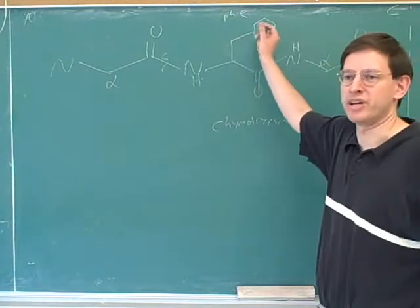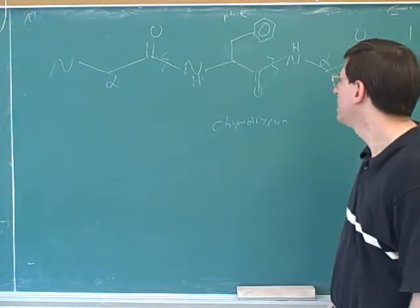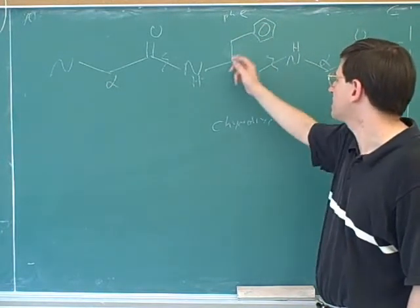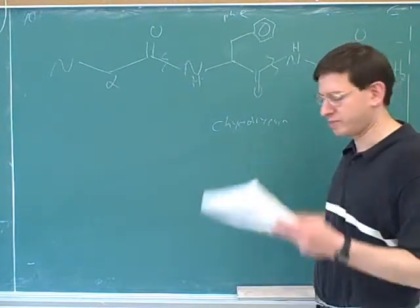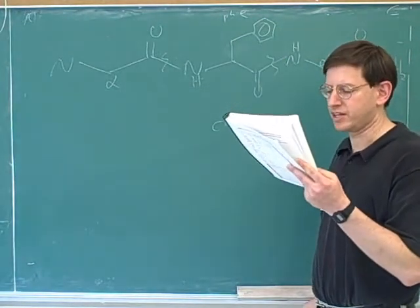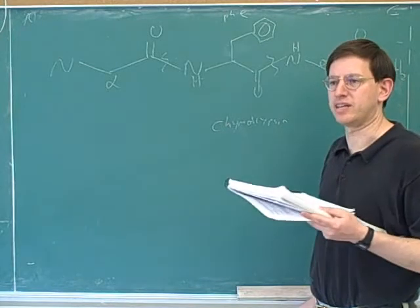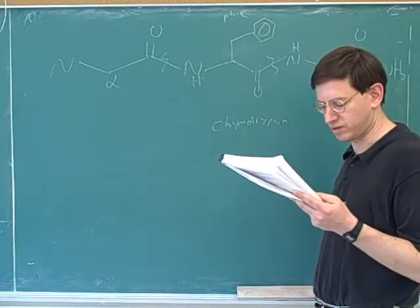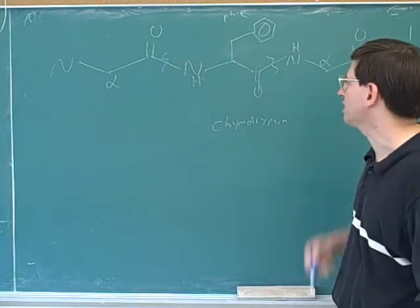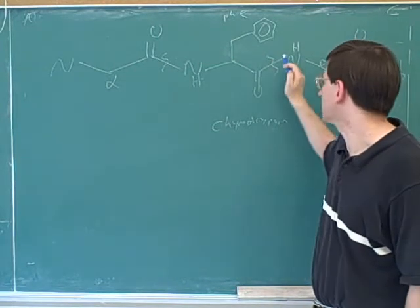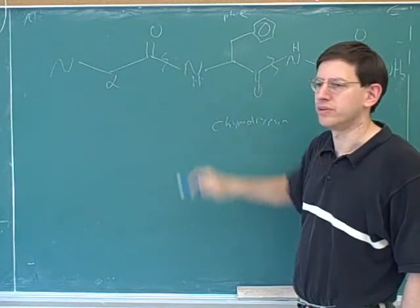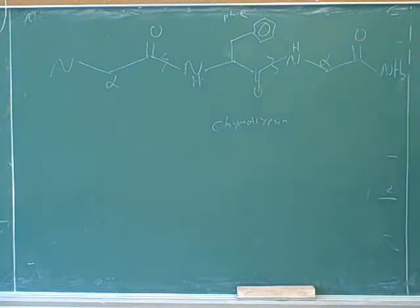This is a problem I just made up on the board. So let's say we have this side chain of phenylalanine, and we want to know which bond chymotrypsin will cleave. We know from the table that chymotrypsin cleaves phenylalanine bonds. The question is: is it going to cleave this bond on the right or this bond on the left? It would be the bond on the right, because it's the carboxy side.